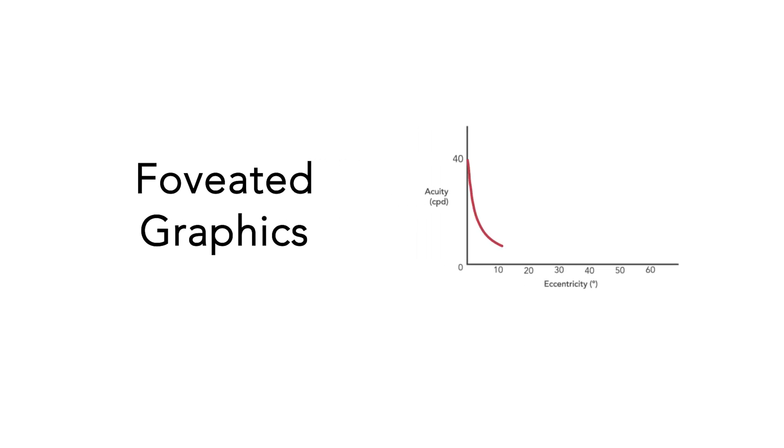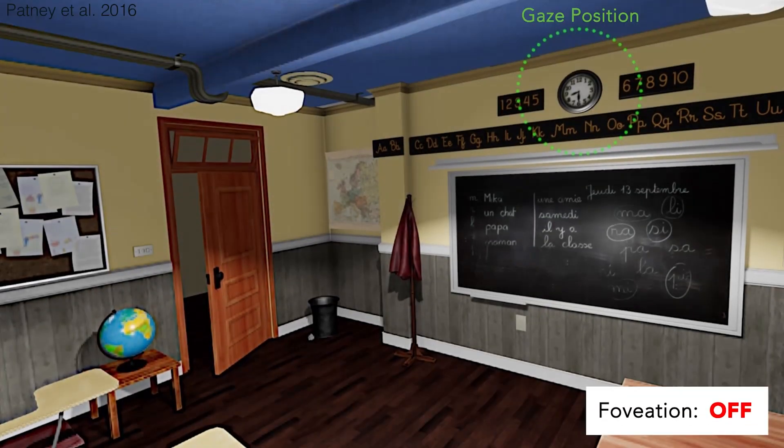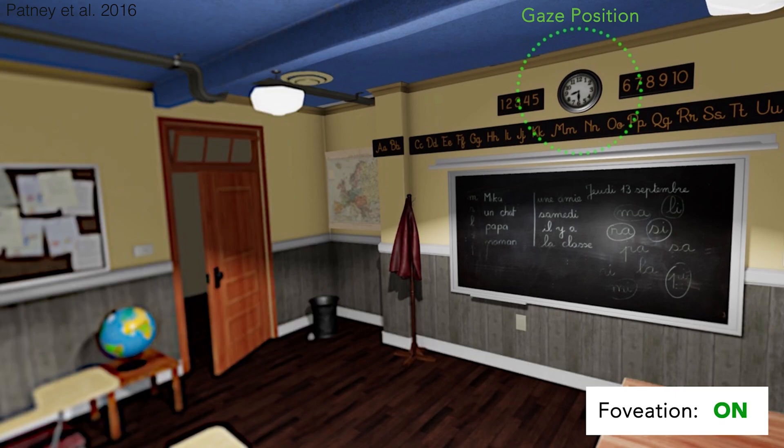Foveated graphics has emerged as a suite of techniques that exploits the eccentricity-dependent acuity of human vision to minimize bandwidth in an imperceptible manner. In a VR-AR system, this is often implemented using gaze-contingent rendering, shading, compression, or display.